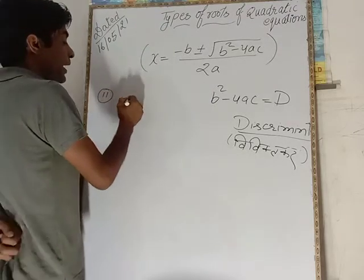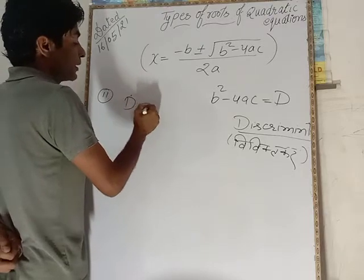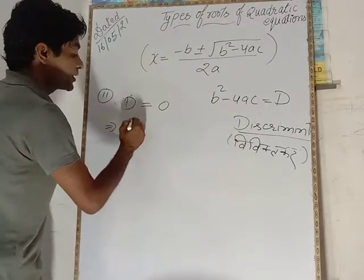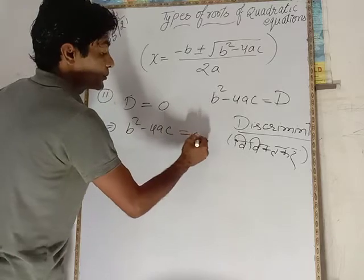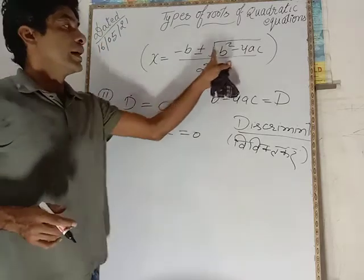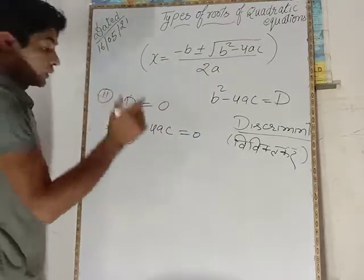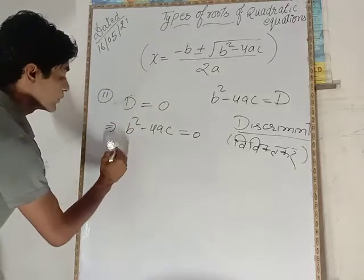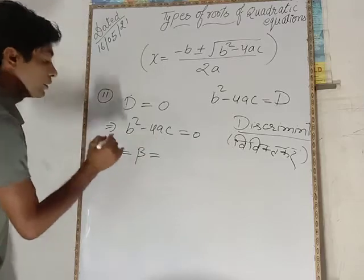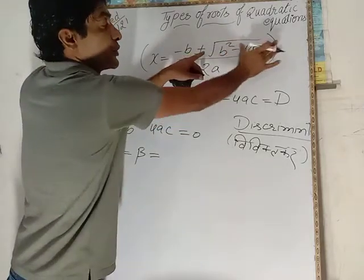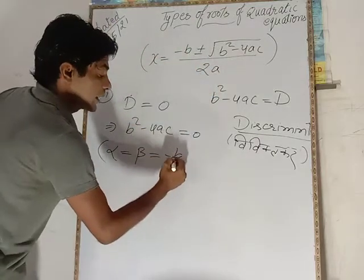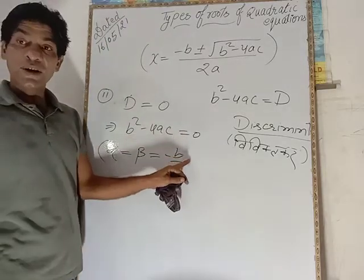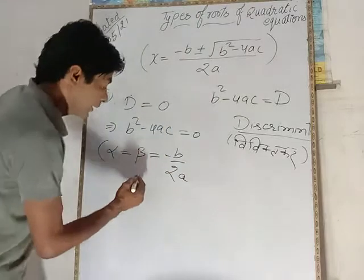Second, when discriminant is equal to 0, when discriminant is equal to 0, it implies that b squared minus 4ac is equal to 0. When it is equal to 0, it means that square root of 0 is equal to 0. It means the system will have equal roots. Alpha and beta both values are equal to minus b by 2a.